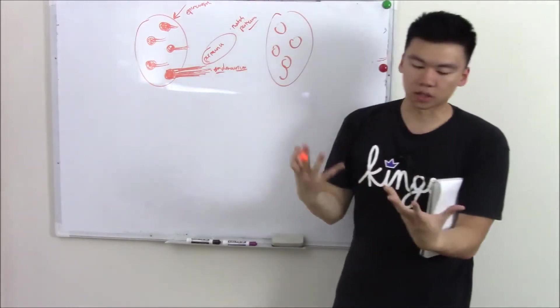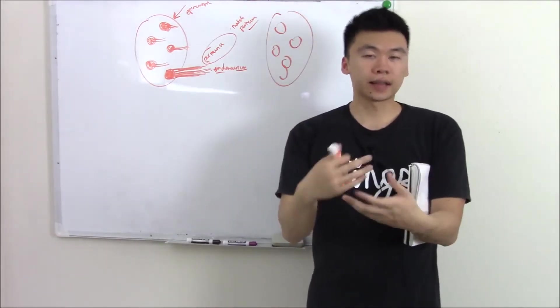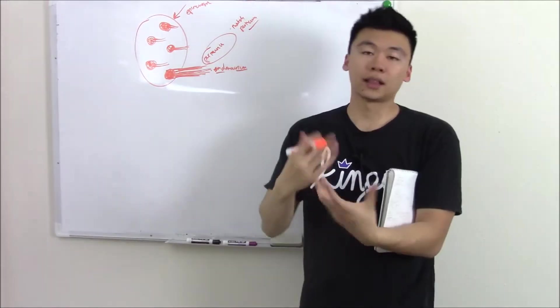That is the structure, the overall structure of your nerves. Now, how do they communicate? Well, they communicate through neurotransmitters. And that will be our next topic. Neurotransmitters.